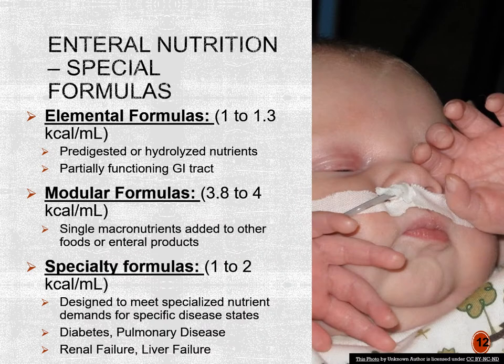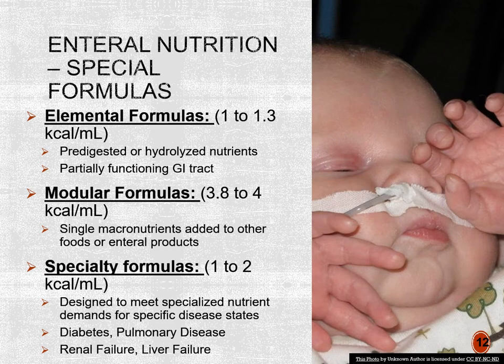If a standardized polymeric formula is not appropriate, we have specialized formulas including elemental formulas. Elemental formulas contain predigested macronutrients to assist the GI tract in metabolizing nutrition and are typically used for patients with malabsorption issues such as cystic fibrosis, ulcerative colitis, and Crohn's disease. Modular formulas are not full formulas — they contain single macronutrients of carbs, protein, and fat that are added to other enteral nutrition products to help increase calories, protein, and fat.